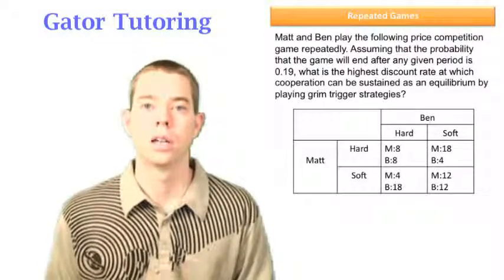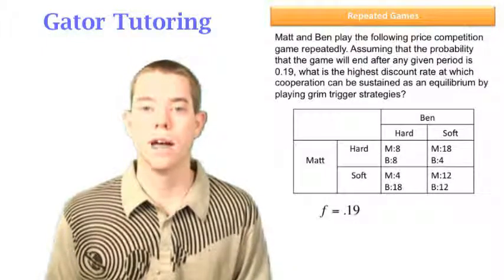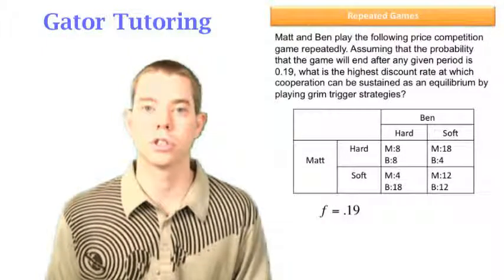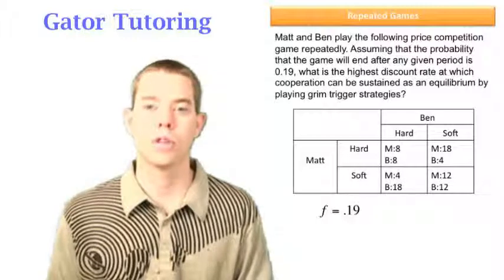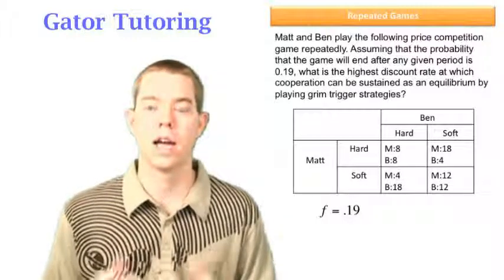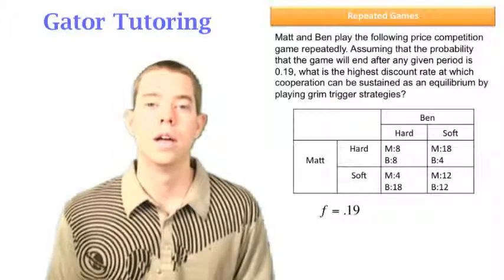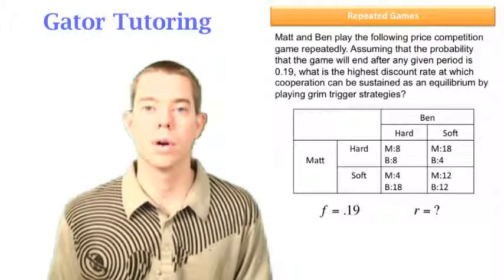Let's take a look at what we're given. We're given F, which is the probability the game will end, which is 0.19. So even though we don't know when the game will end, we know that there's a 19% chance after every round it could end. And we're looking for R, the discount rate.